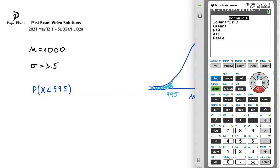Continuing, for our upper limit we'll put in 995, for the mean 1000, and for the standard deviation 3.5. Now we just have to scroll down to paste and press enter twice to get the answer.